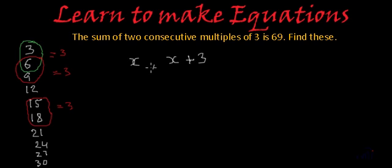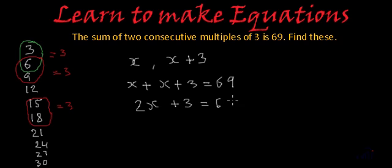And what they are saying? They are saying their sum is 69. That means x plus x plus 3 is 69. x plus x is 2x plus 3 equals 69. So if we minus 3 from both the sides, we will get 2x is equal to 69 minus 3 which is 66.